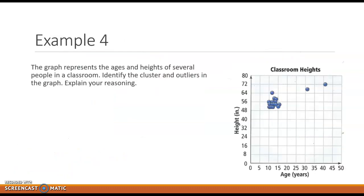The graph represents the ages and heights of several people in a classroom. Identify the cluster and outliers in the graph and explain your reasoning. So here's my cluster, right? So the cluster is between x values that,